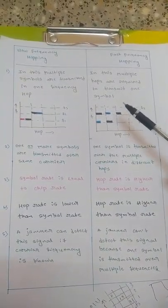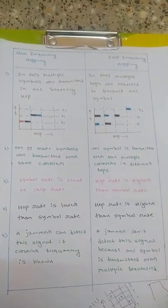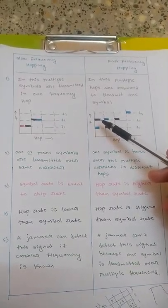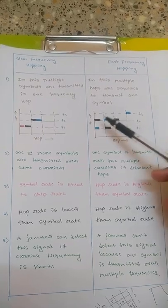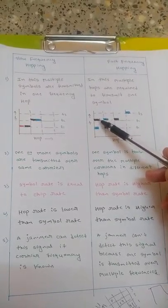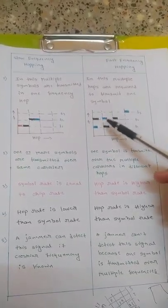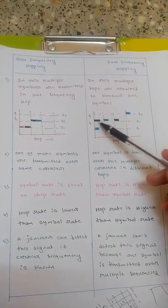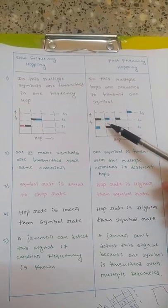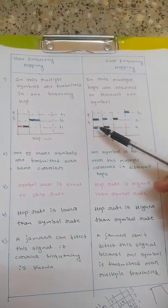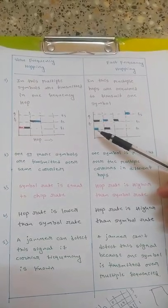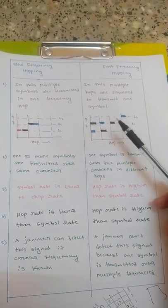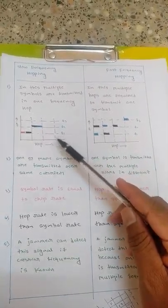In fast frequency hopping, multiple hops are required to transmit one symbol. We are transmitting the same data over multiple frequencies — for example, this black color data: we transmit part of it here, then here, then here, so that jamming of the signal becomes more difficult. Fast frequency hopping means higher frequency switching — frequency changing rate is greater compared to the symbol rate. The hopping rate is higher than the symbol rate, whereas in slow frequency hopping the hopping rate is lower than the symbol rate.